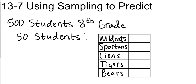So let's say we pulled 50 students and these are the results that came up. Out of those 50 students, the five choices given were Wildcats, Spartans, Lions, Tigers, and Bears — oh my! We had 8 that wanted to be Wildcats and 16 that wanted to be Spartans.